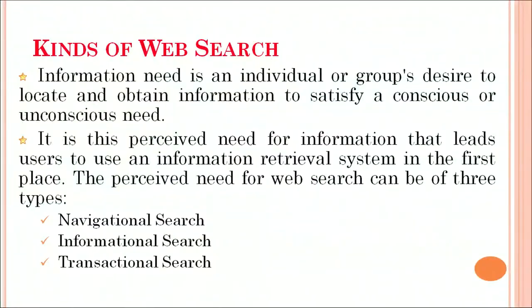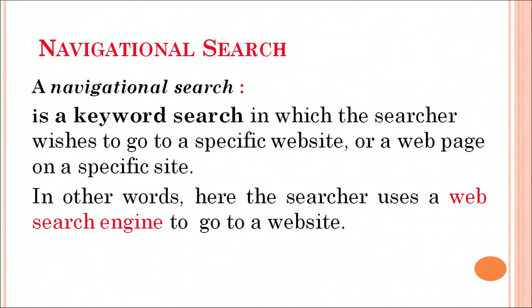What are the kinds of web search? The information need is an individual or group's desire to locate and obtain information to satisfy the conscious or unconscious need of the users. It is the perceived need for information that leads users to use an information retrieval system in the first place. The perceived need of the web search can be of three types: navigational search, informational search, and transactional search. Navigational search is a keyword search in which the searcher wishes to go to a specific website or a web page on a specific site.